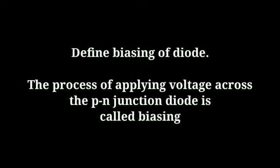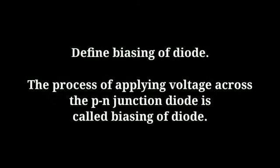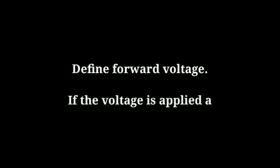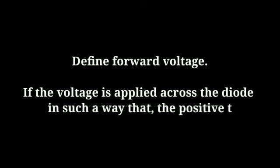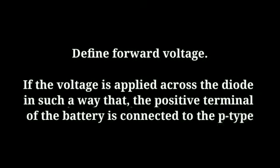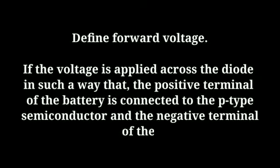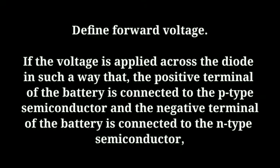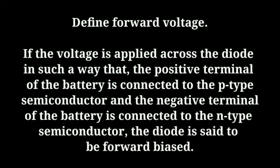Define biasing of diode: the process of applying voltage across the PN junction diode is called biasing of diode. Define forward bias: if the voltage is applied across the diode in such a way that the positive terminal of the battery is connected to the p-type semiconductor and the negative terminal of the battery is connected to the n-type semiconductor, the diode is said to be forward biased.